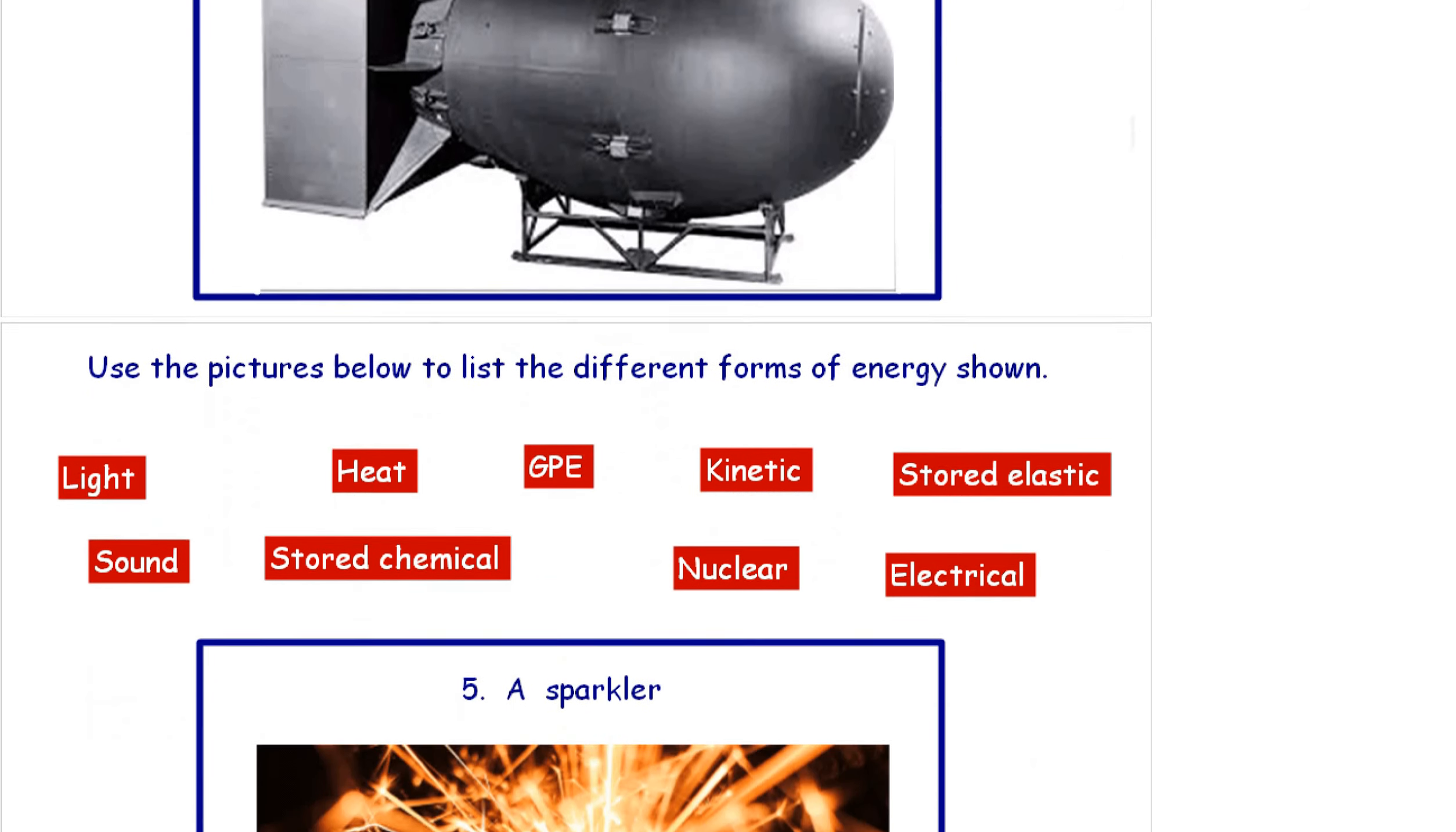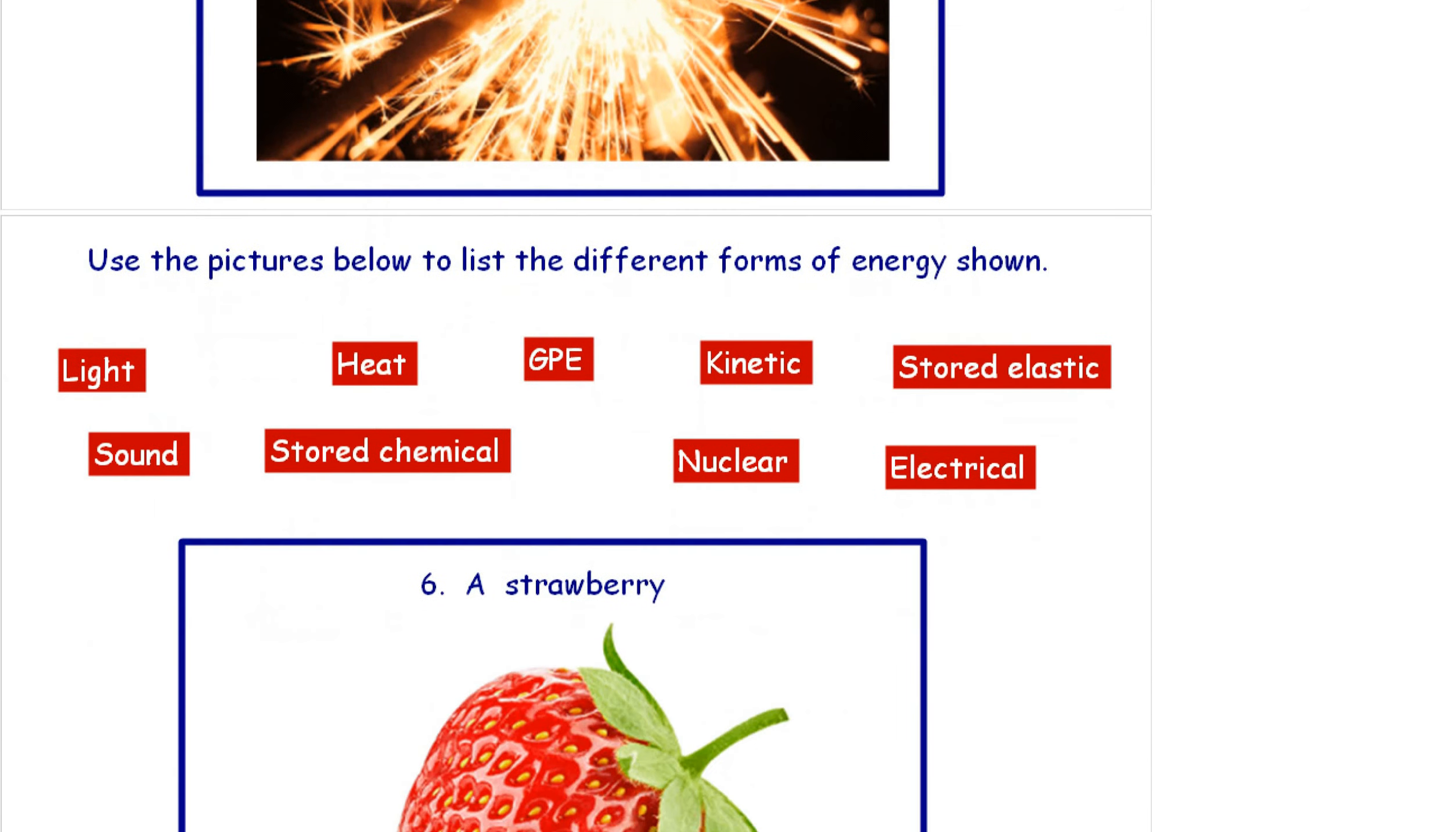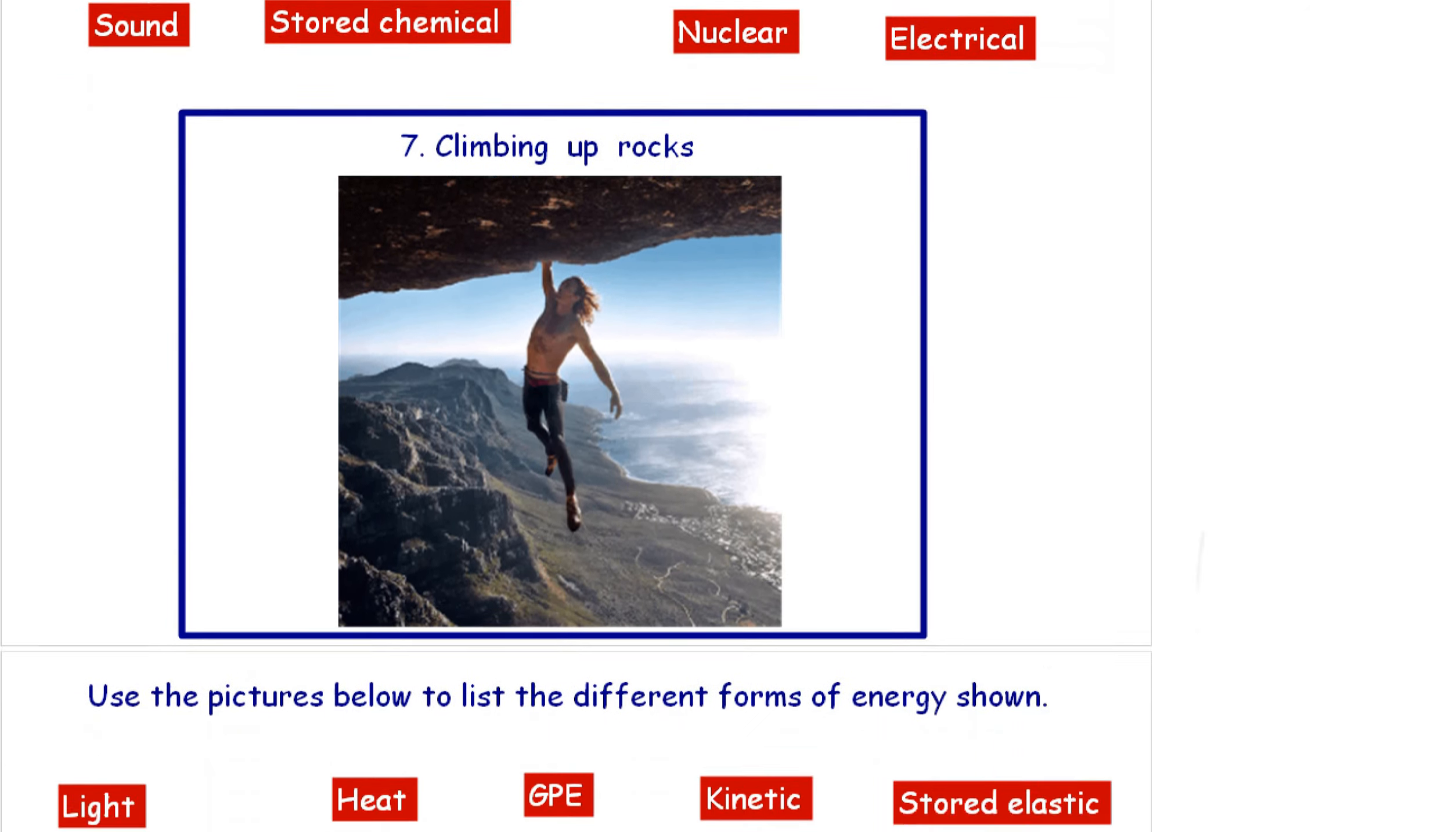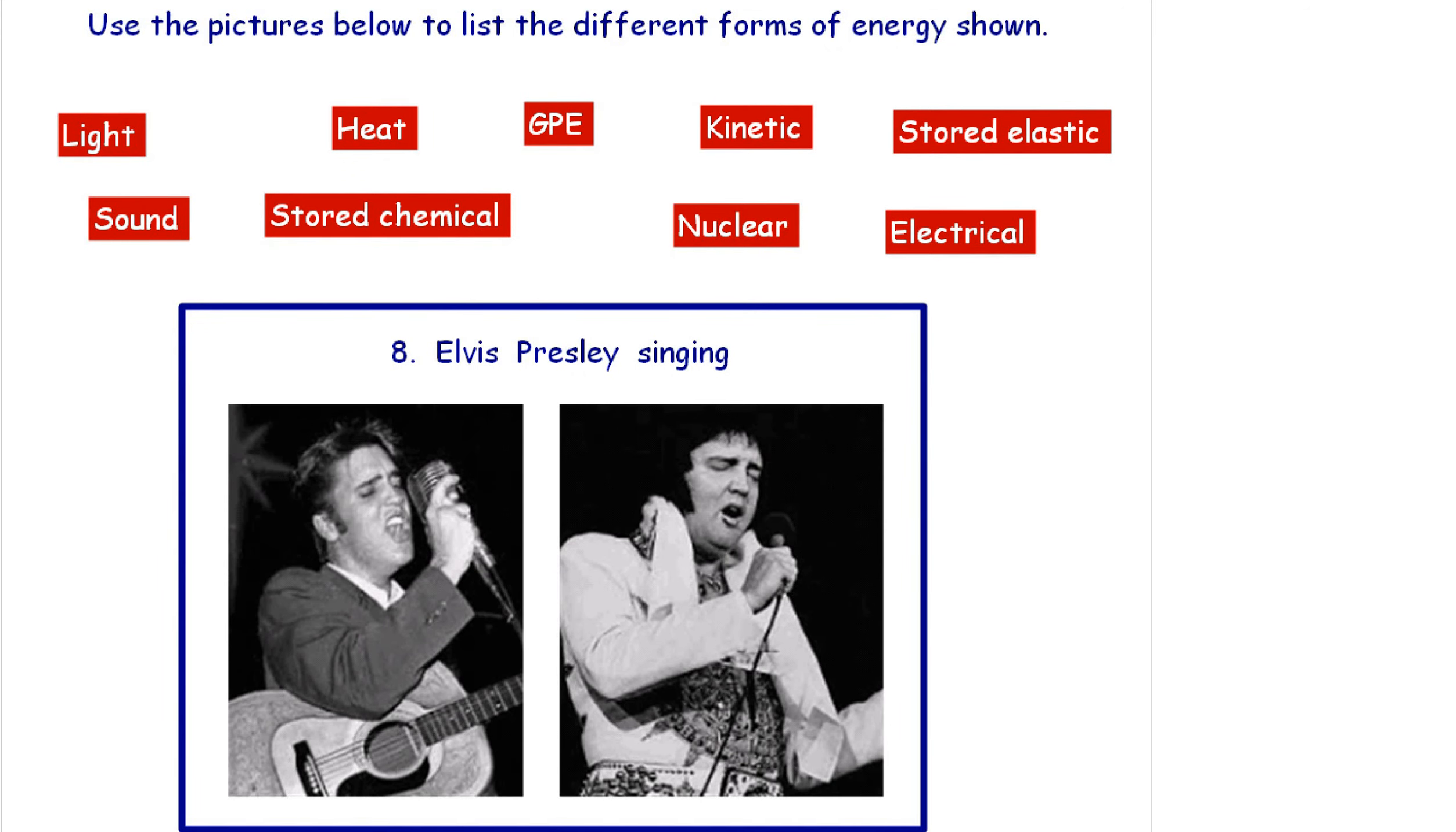The next four you can have a go at. So the sparkler, you choose, you write down which different forms of energy are in the sparkler. Have a go at the strawberry, have a go at this individual climbing up some rocks. And finally, you may or may not have heard of this person, Elvis Presley is singing. What type of forms of energy do these different pictures show?